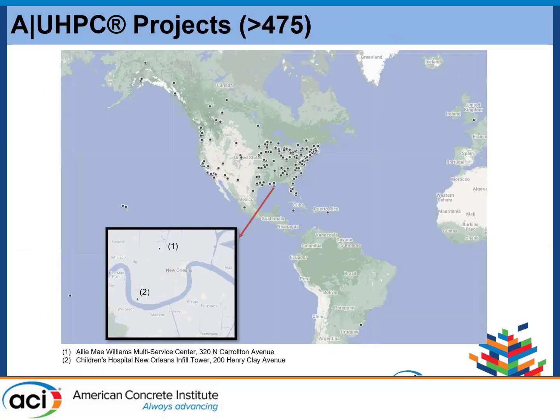How many projects have used architectural ultra-high-performance concrete? There have been 475 projects in the US, and probably around 550 when including other companies. Here in the New Orleans area, there are two projects worth visiting: the most recently finished is Children's Hospital here in New Orleans. The other is a recladding of an older building where the old facade was removed and replaced with a new ultra-high-performance concrete facade.